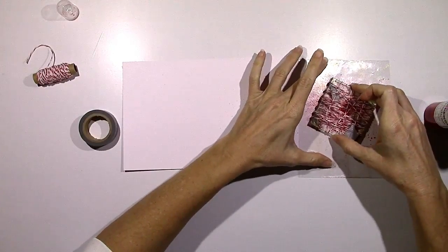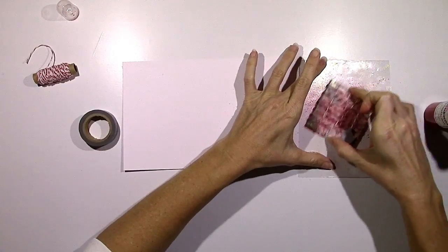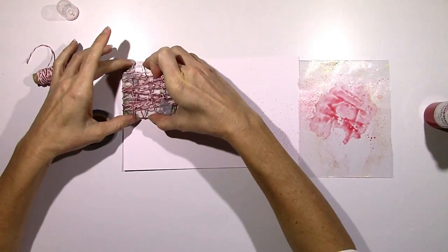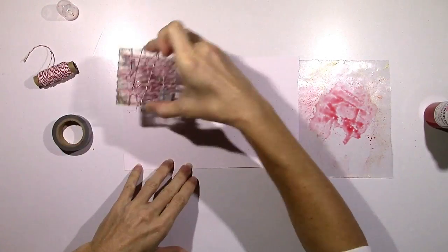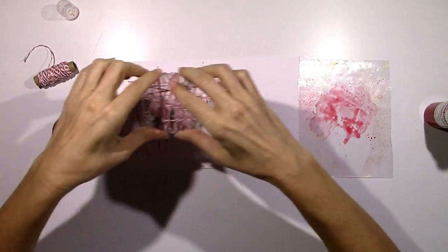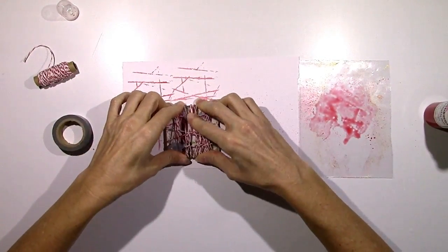So I'm just going to stick it in the spray and then stamp it down on some white cardstock. And the good thing about this is you can stamp several times and you're going to have lots of ink left on the string because it's string and it's going to absorb the color, of course.